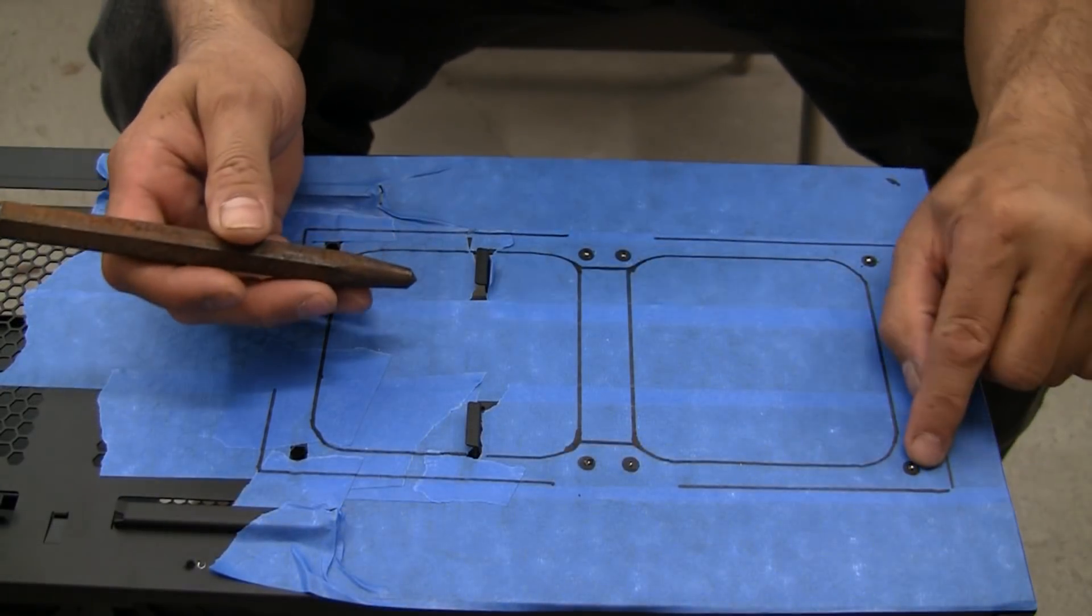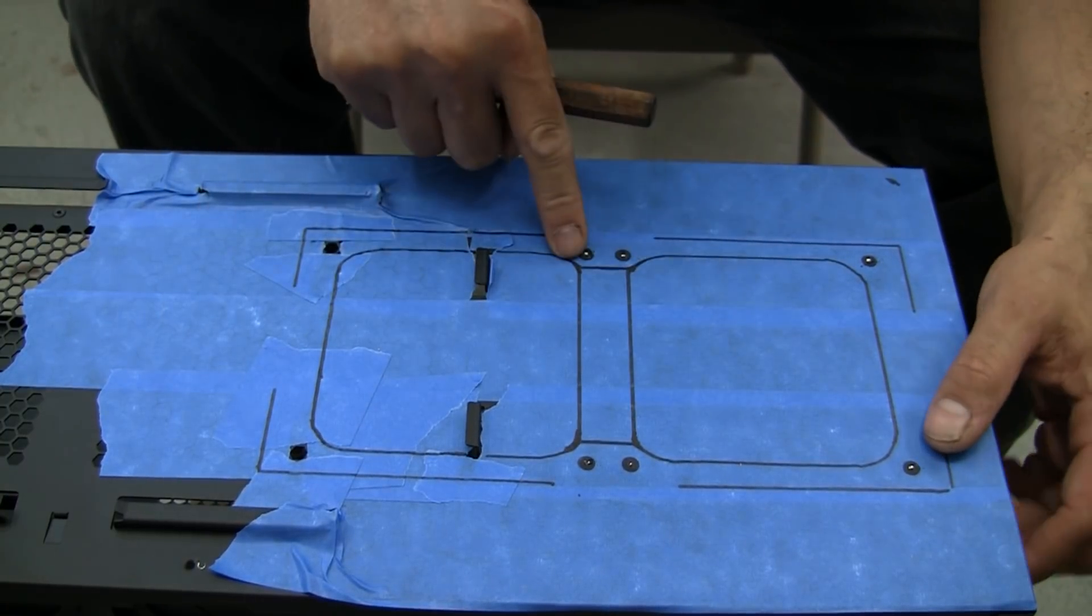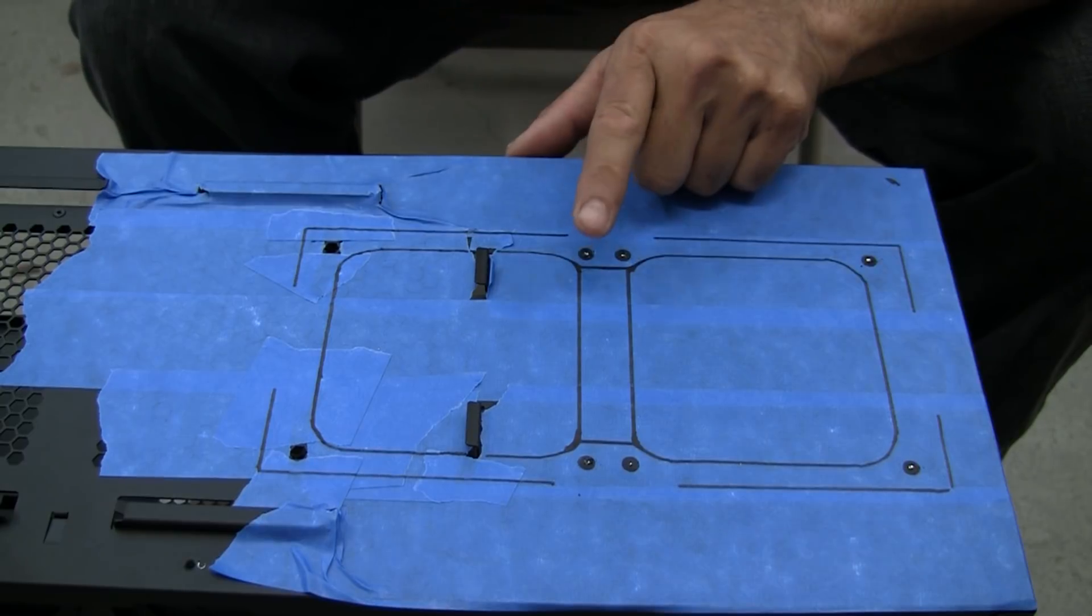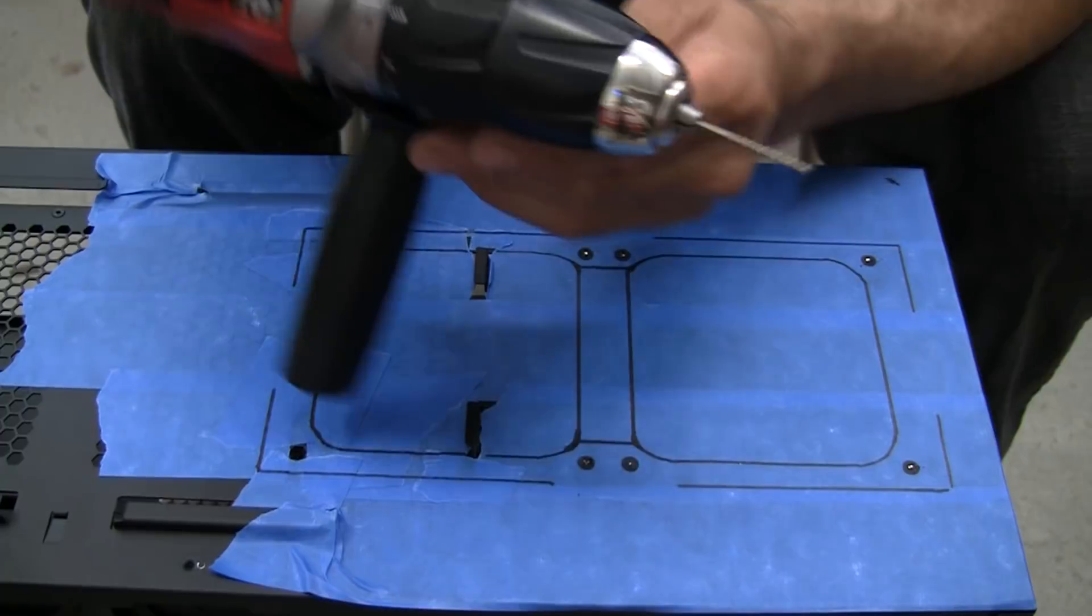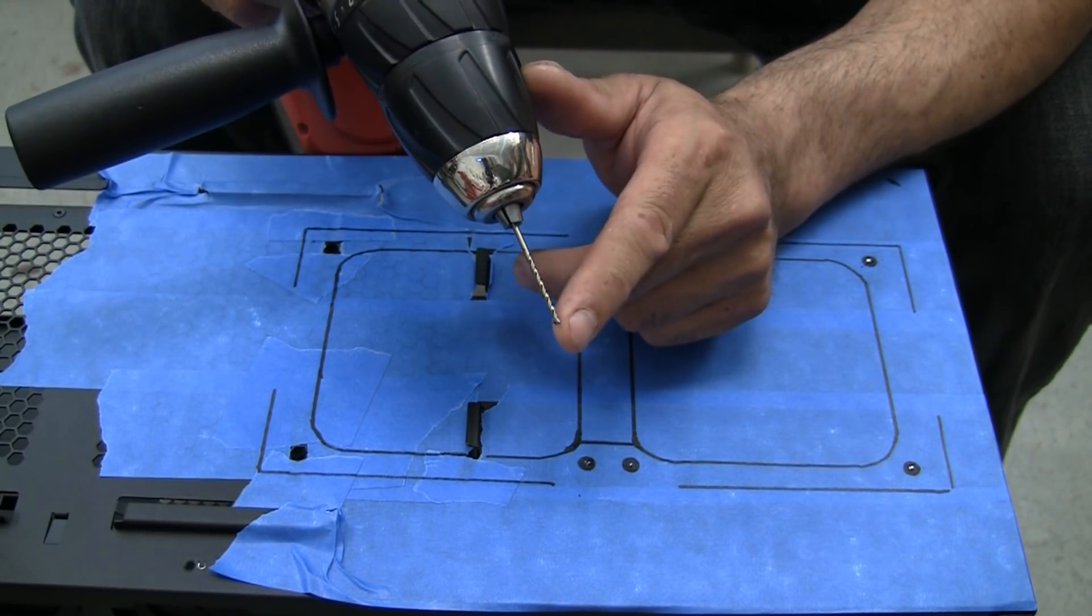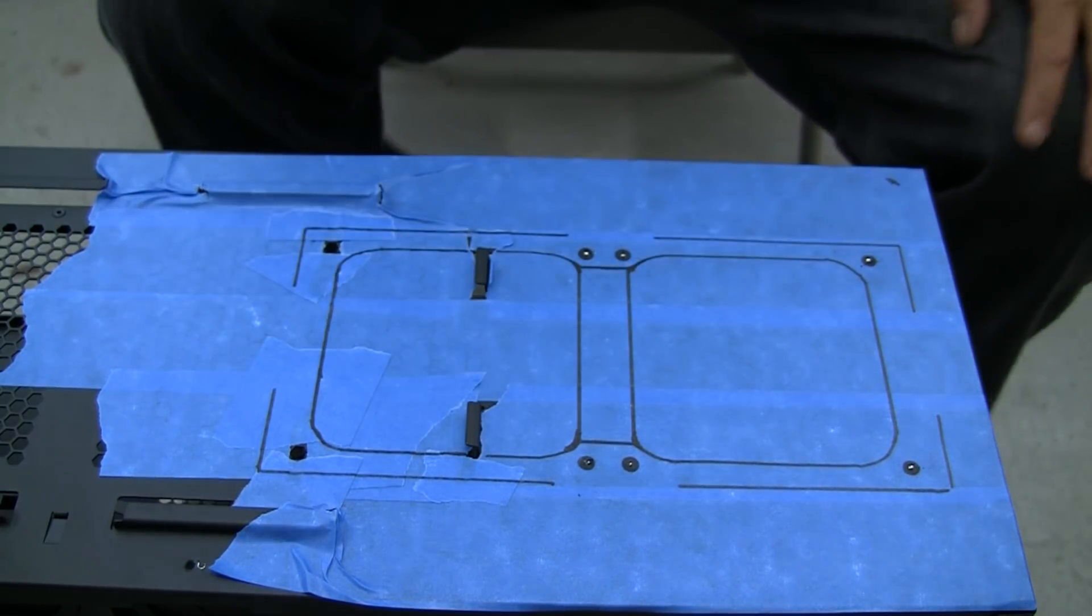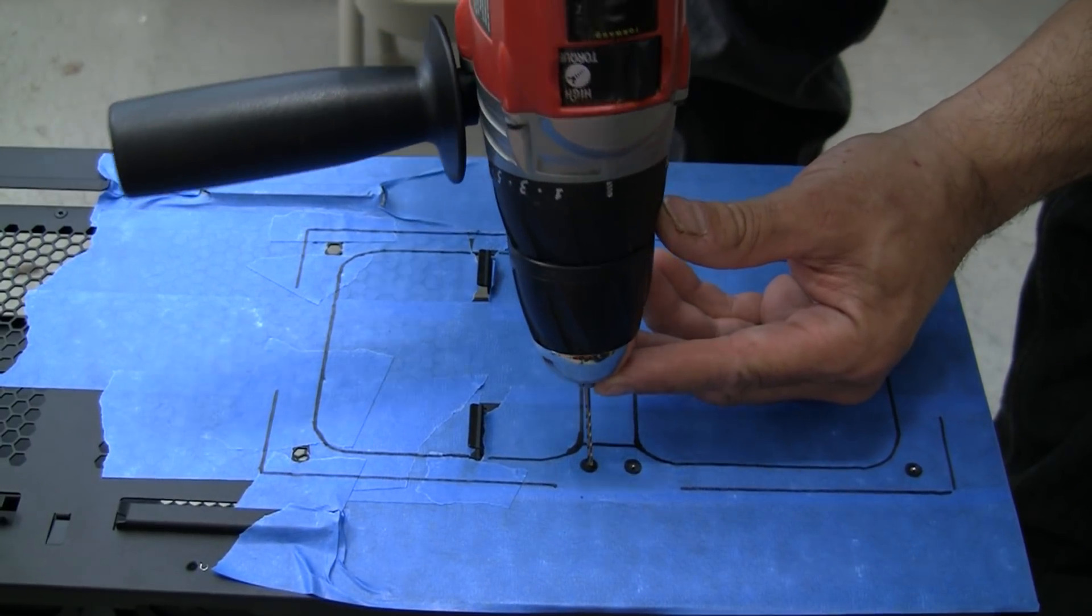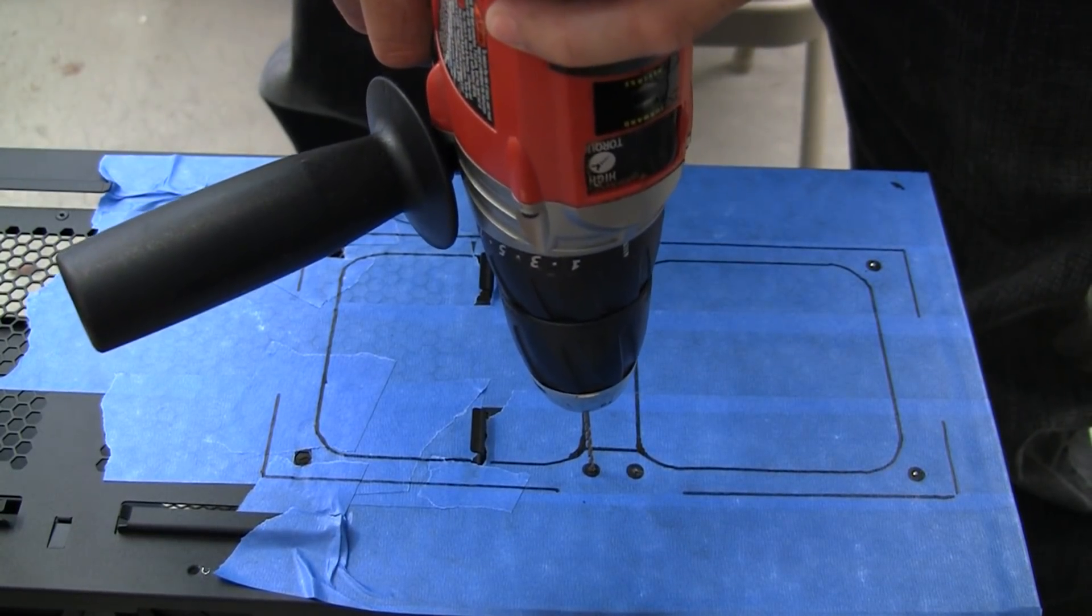The first thing we'd like to do before we actually start drilling these holes is take a center punch and punch the center of these holes. This will help to prevent the drill bit from traveling on you. Another thing I suggest that you do is, even though we're drilling quarter inch holes here, I like to use a smaller bit as a pilot hole, and in this case it's a 3/16 inch bit.